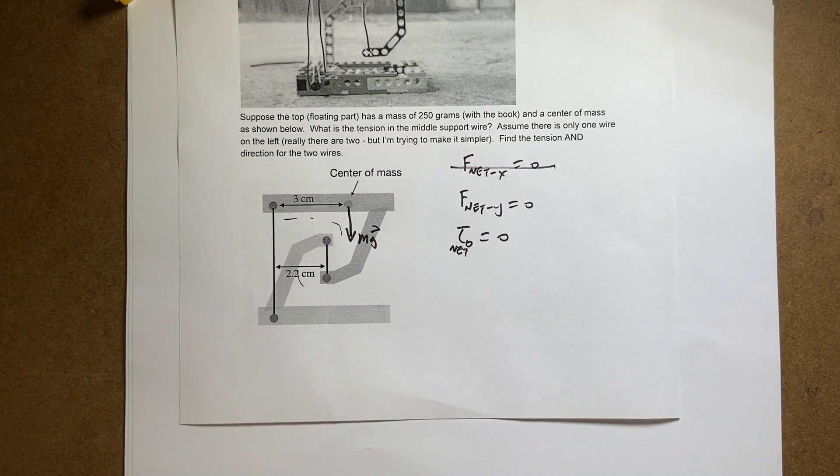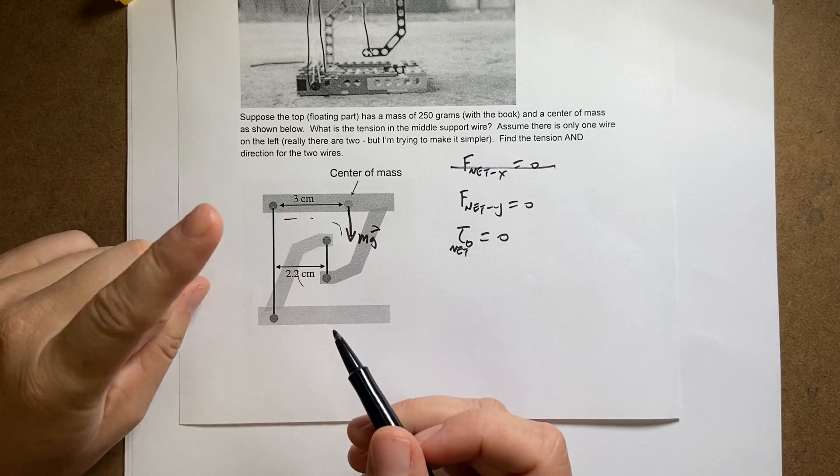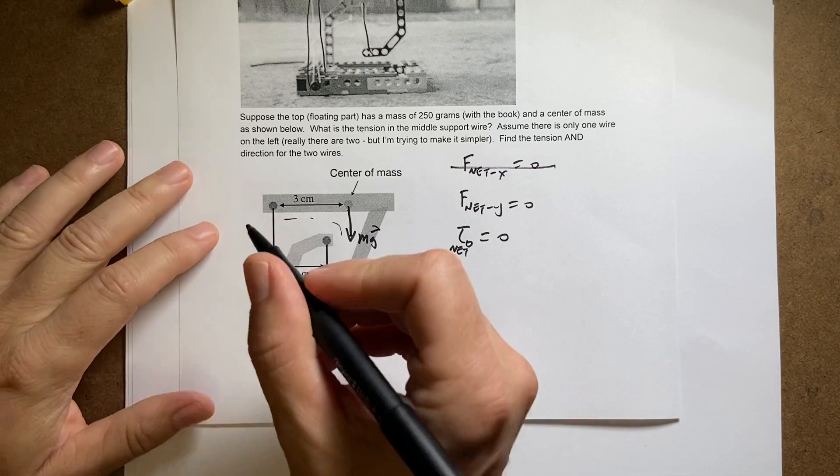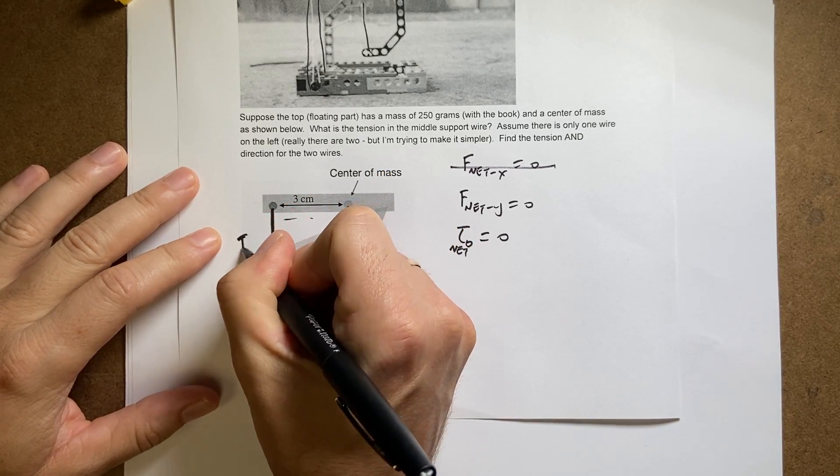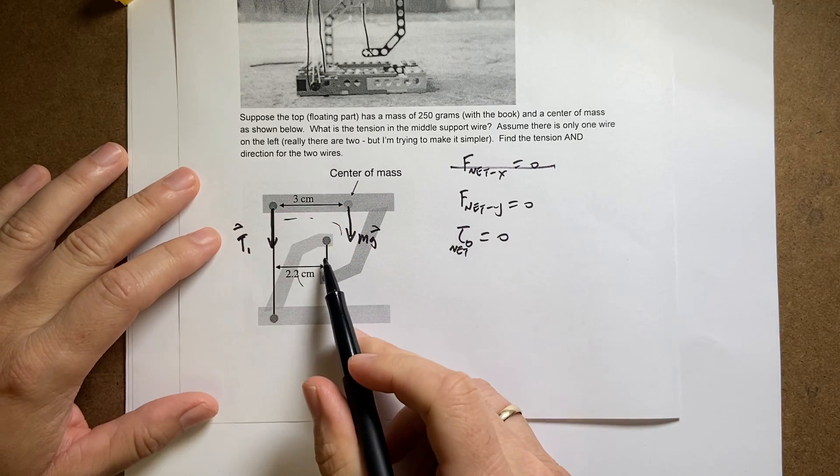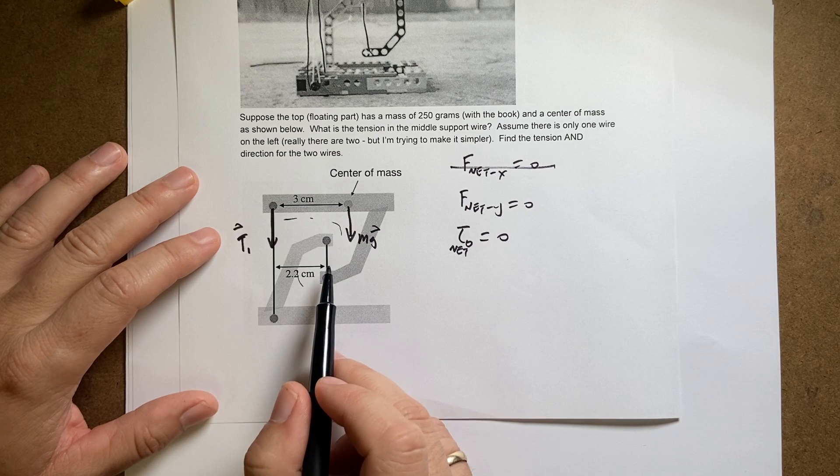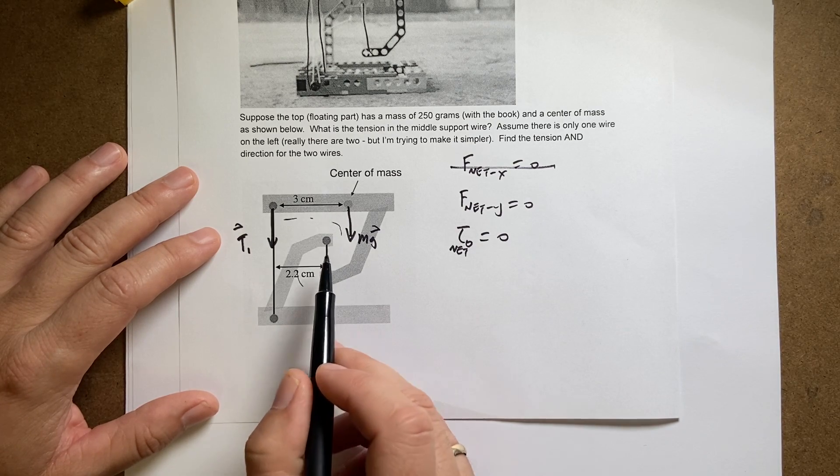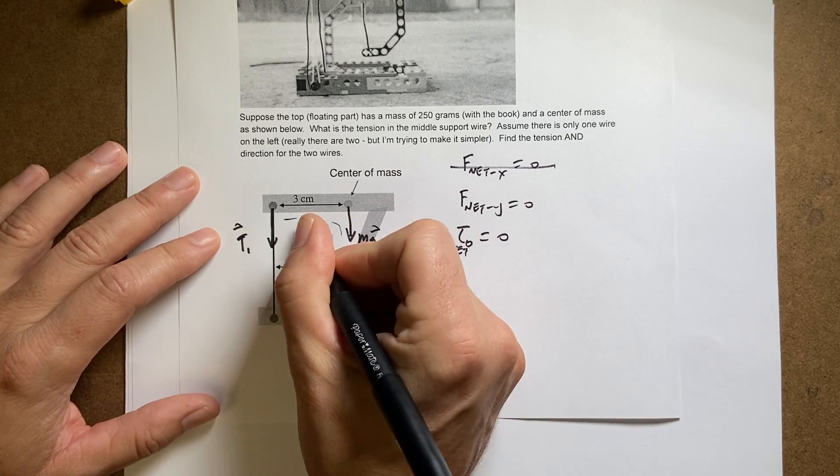Now what other forces are acting on it? Well, it's just two things pulling on it, the tension. So this string, strings can only pull. So this string is pulling down. I'll call this T1. And this string, here's the trick. This string is pulling up on the table because it's hanging down below there. So this I'll call T2.